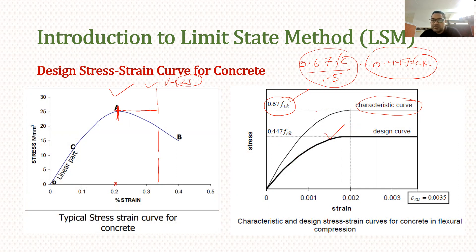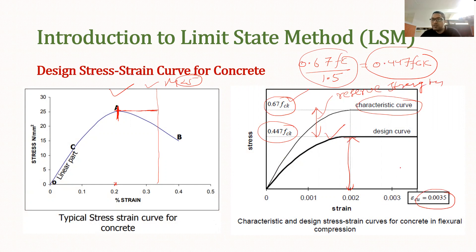This is the design strength, and corresponding to this design strength we have this idealized strength curve. The remaining strength above this is basically the reserve strength. In our design we will be using only this much strength of concrete, which is around 45 percent of the actual strength. The maximum permissible strain in the concrete is 0.0035. This is the idealized curve that we will be using in our design, and all the formulas will be based on this curve.